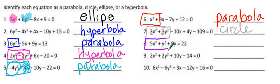Number 8, we are adding them together, and the coefficients are different, which means it has to be an ellipse.